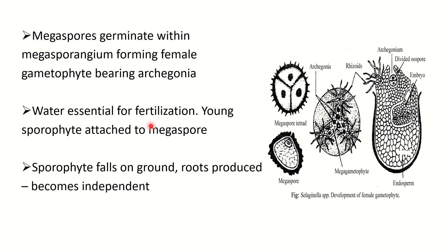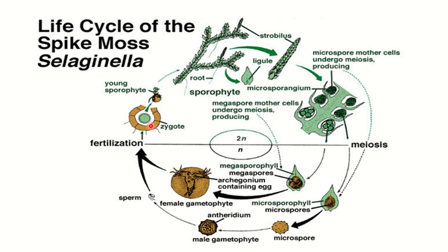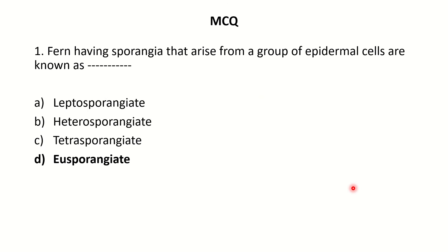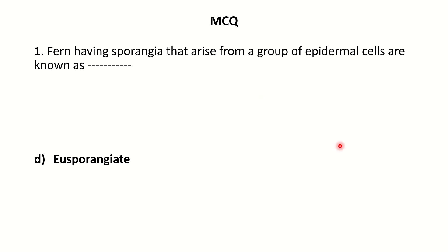The sporophyte falls on the ground and becomes independent once it produces roots. This is a vivid picture of the life cycle of Selaginella — please note it very carefully, as everything discussed so far is represented in this diagrammatic representation.